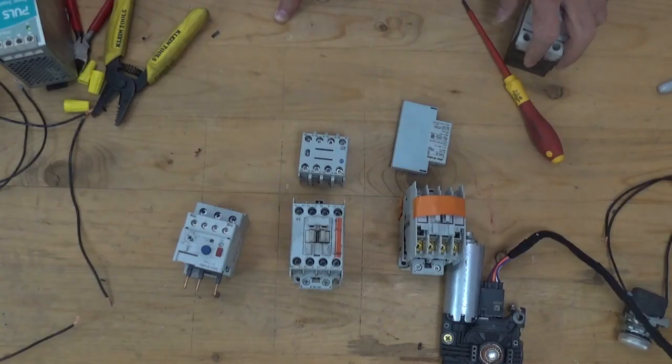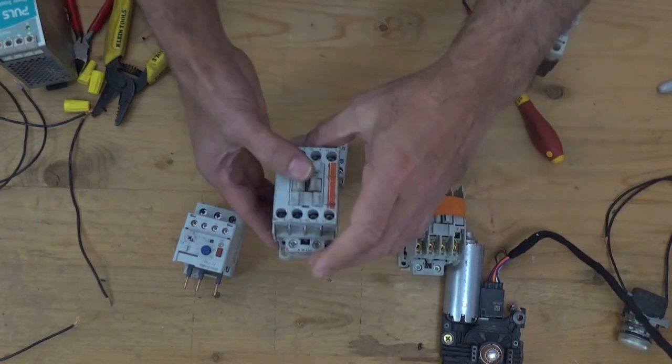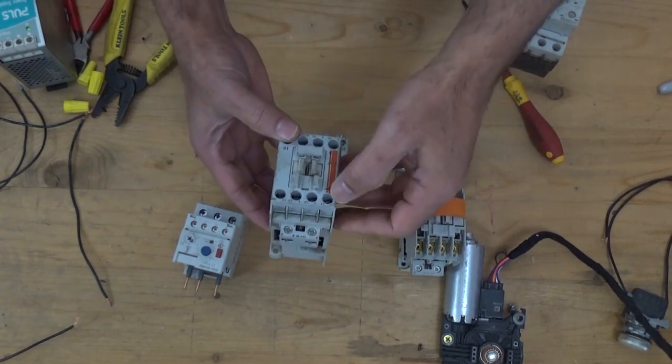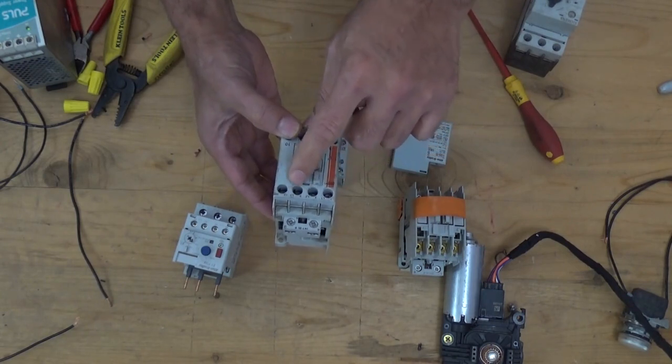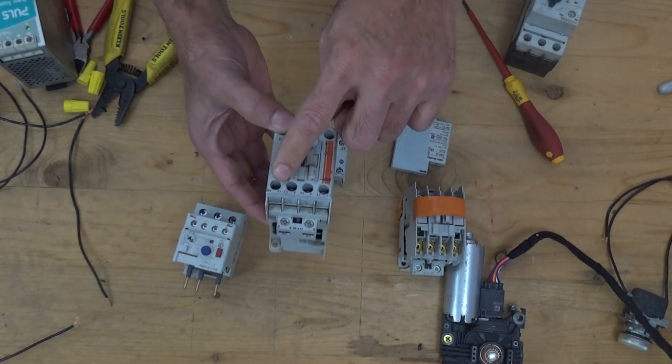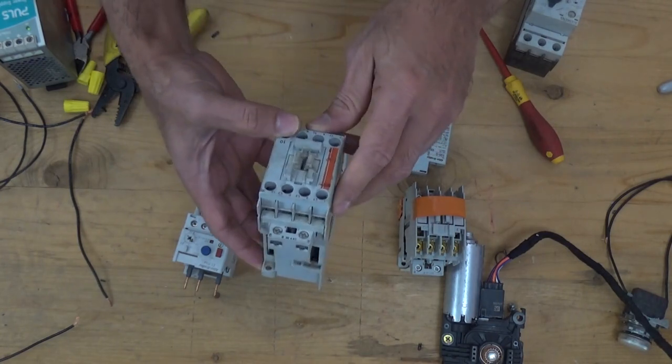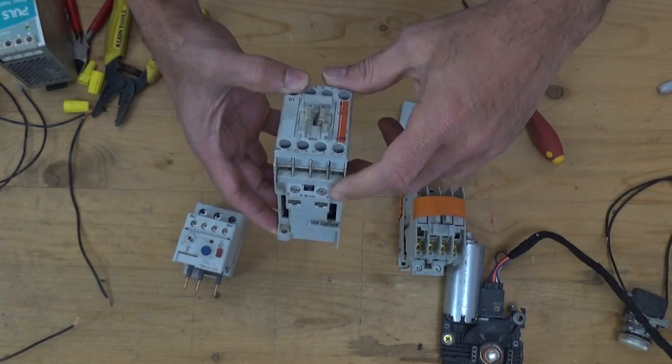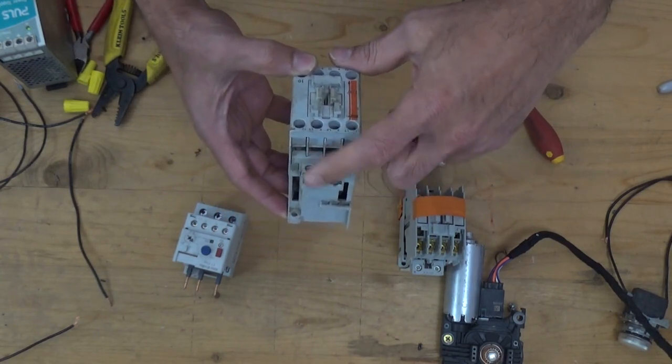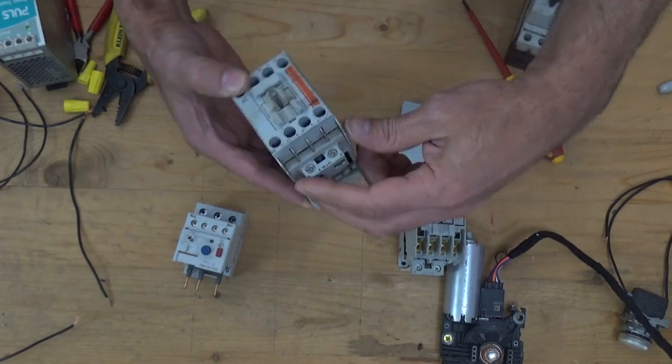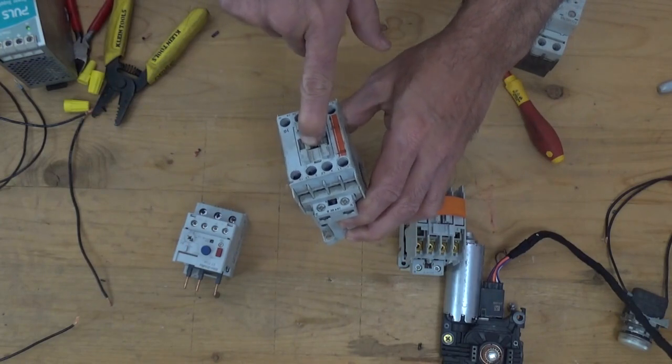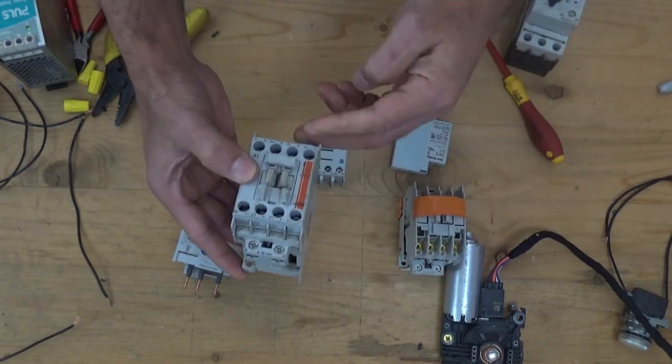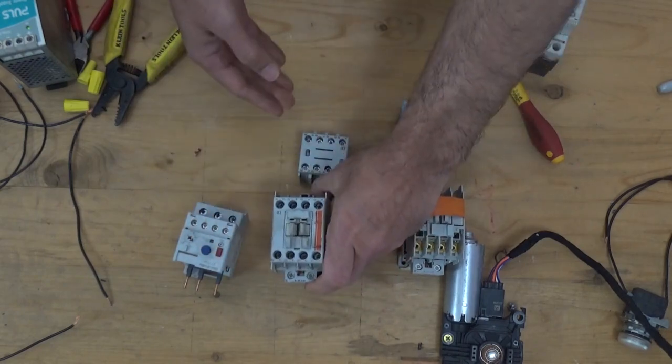Hey guys, today we're going to discuss motor contactor and overload relay inner parts. This is the magnetic contactor. This is line one, line two, line three, or one, three, five. On the bottom side, we have A1 and A2. This is our coil. When we supply this one, the plunger here will be pushed down. The plunger here will be pushed down, passing from line one to T1.